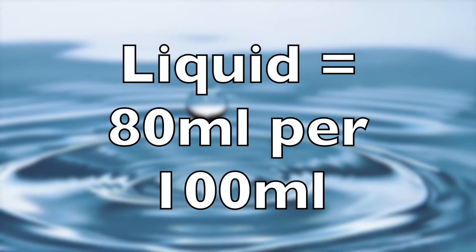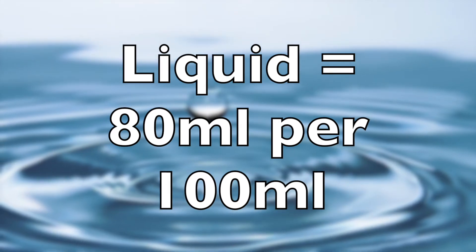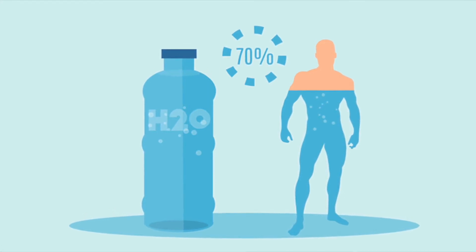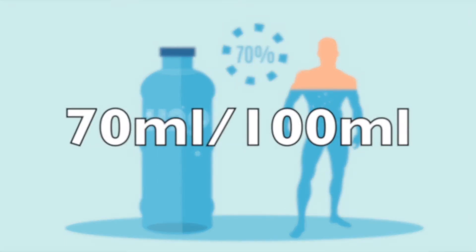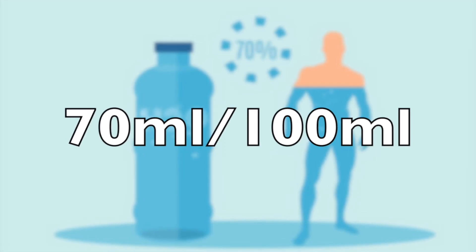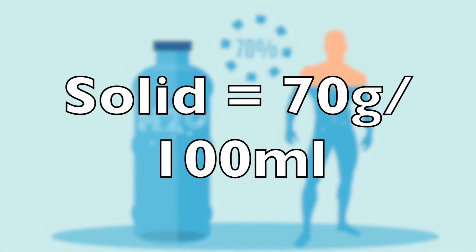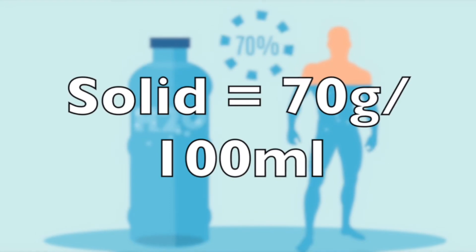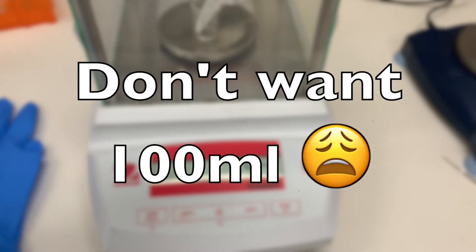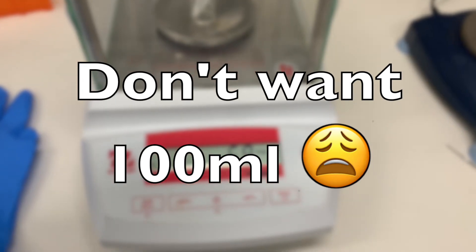Say it's a 70% solution. If we're thinking of a liquid, then it's 70 milliliters in every 100 milliliters — volume percentage automatically means per 100. If the reagent we're about to use is a solid, then it's 70 grams per 100 milliliters volume.